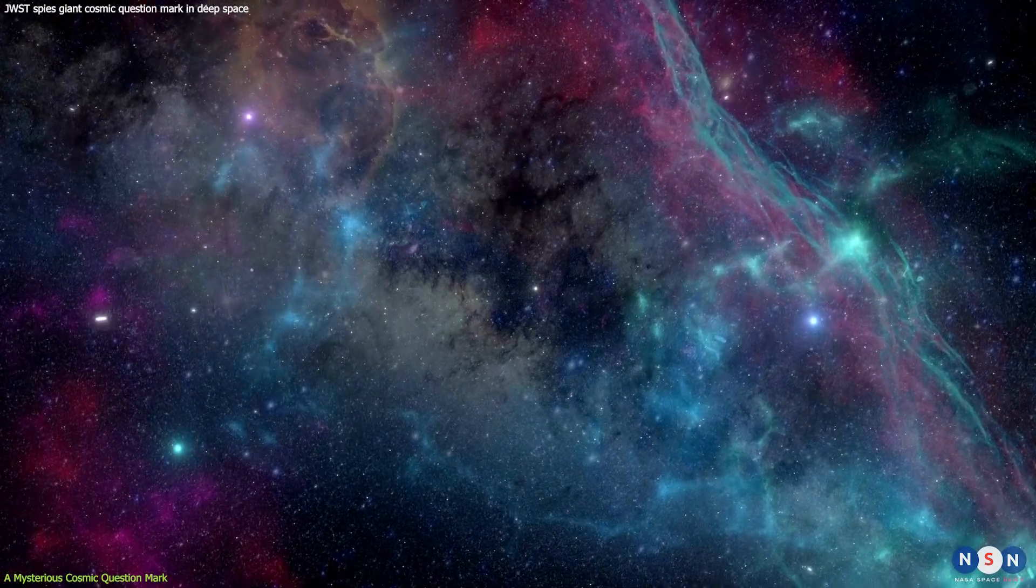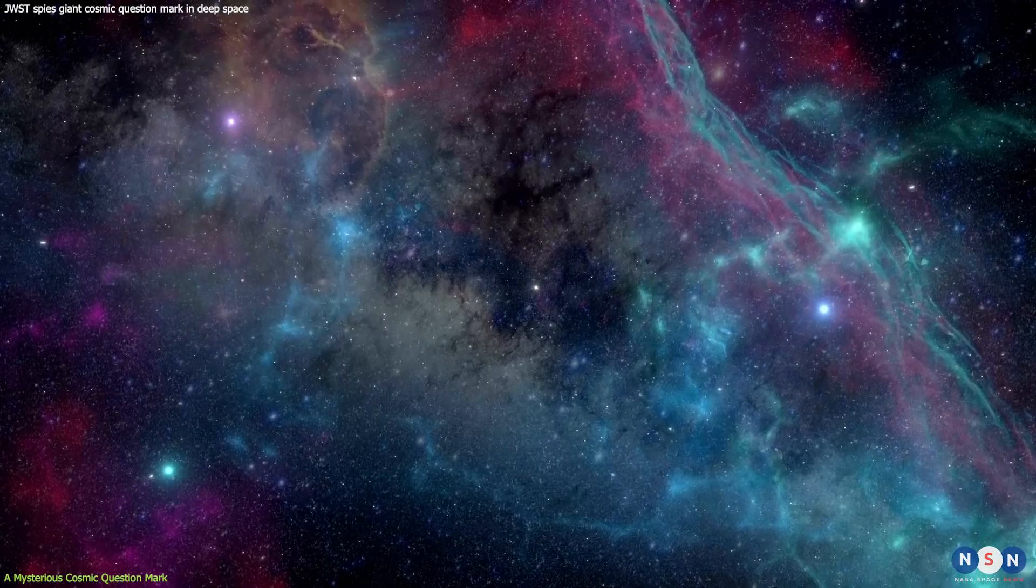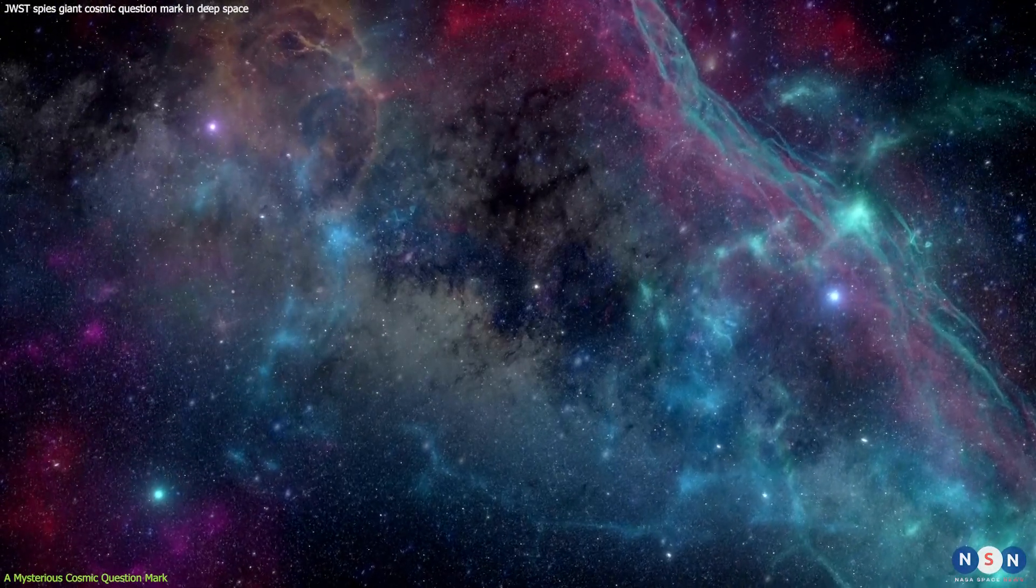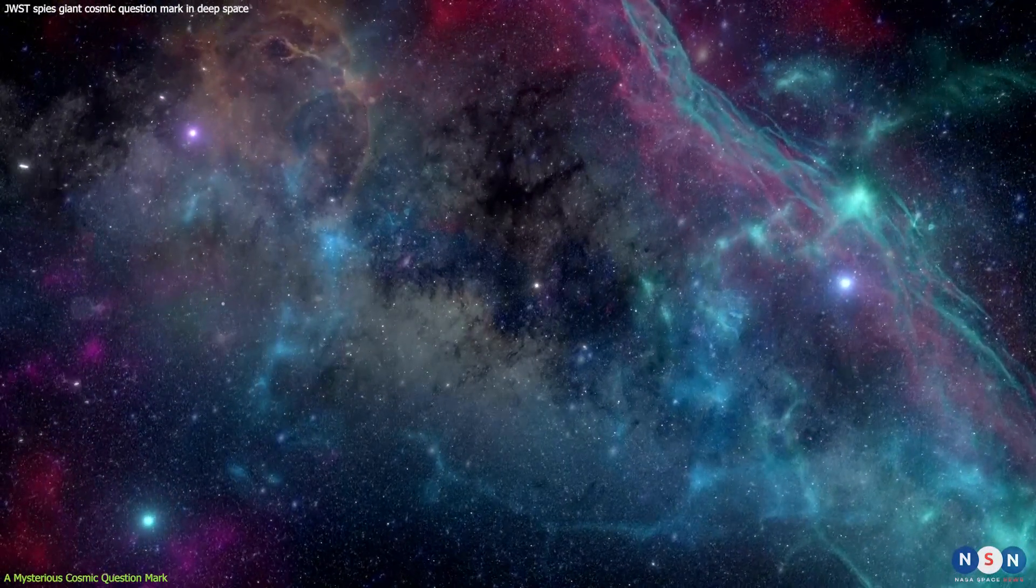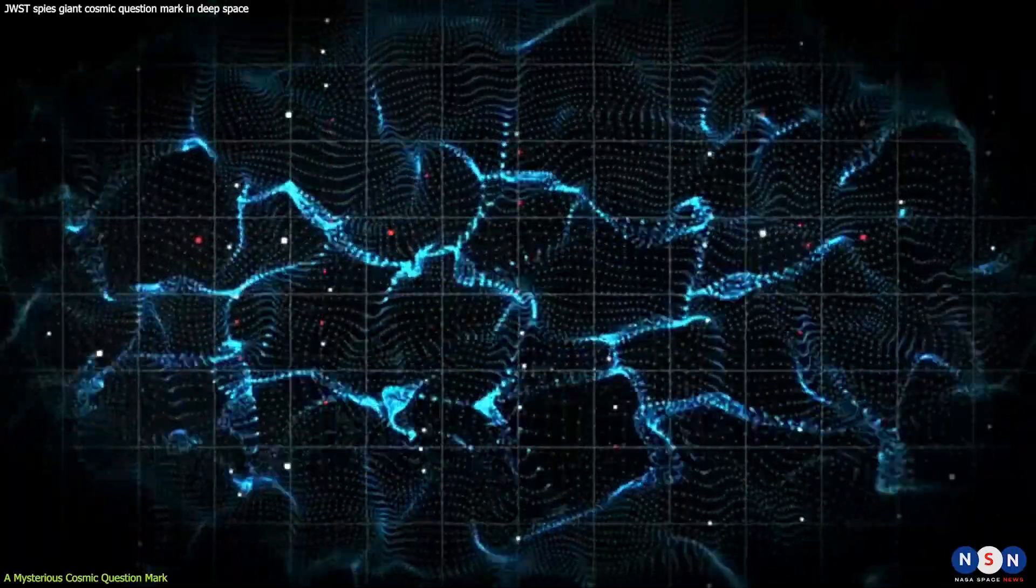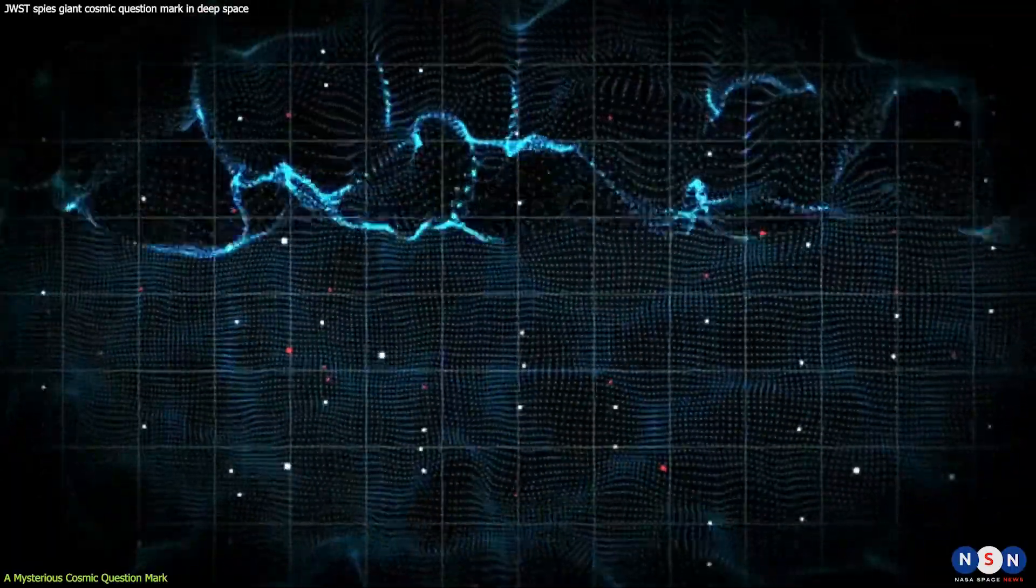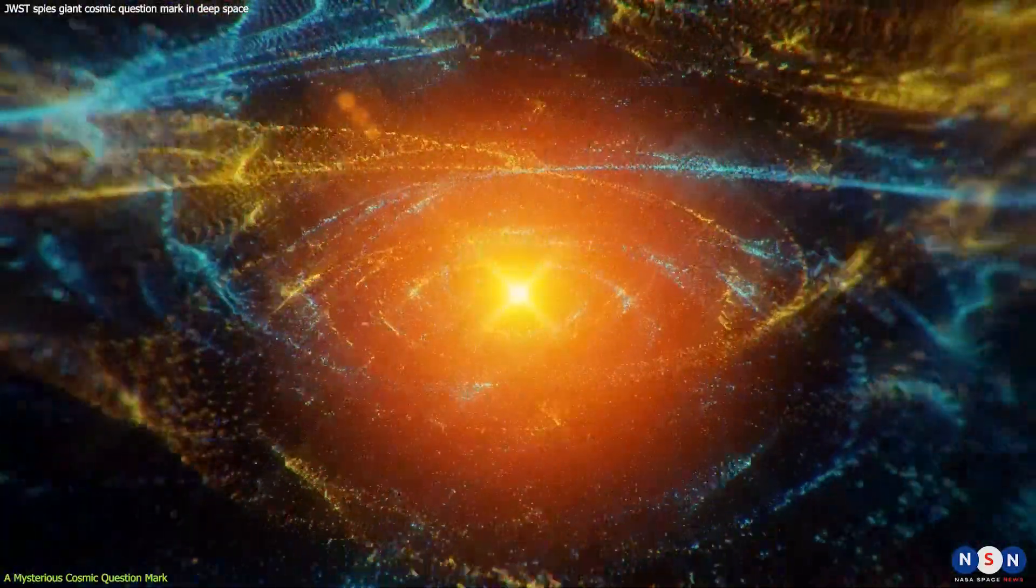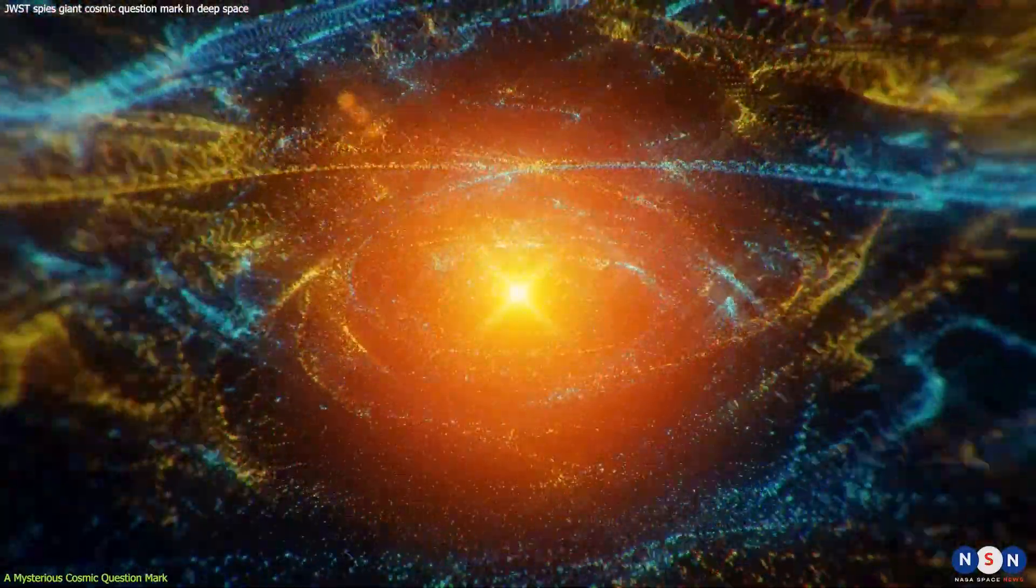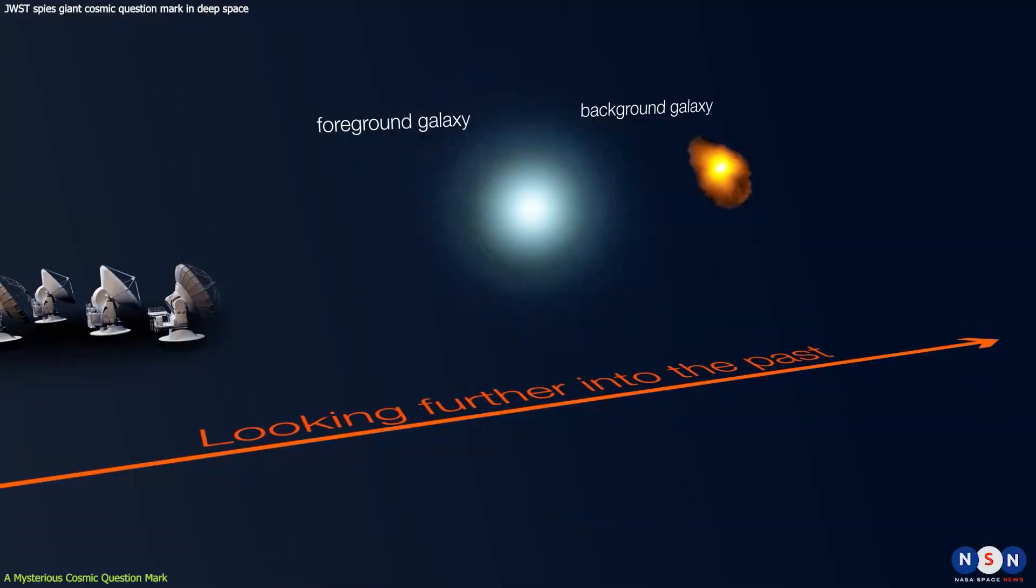Dark matter is a mysterious substance that makes up most of the mass in the universe, but does not emit or reflect any light. We can only detect it indirectly through its gravitational effects on normal matter.